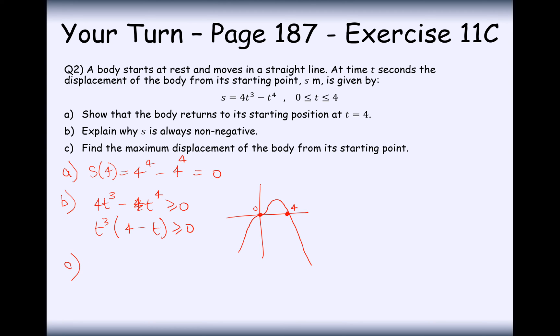Part C here is find the maximum displacement of the body from its starting point. So if we want to find maximum displacement, then we're going to look for whenever the velocity was equal to 0 and it started to turn back round again. So v is the differential of this thing here, so that's going to be 12t squared minus 4t to the 3. And we want to set this equal to 0, because we want to find its maximum displacement away from the body. We want to find the turning point.